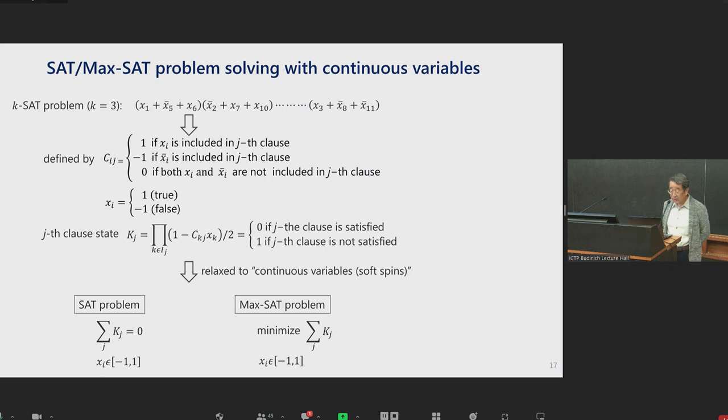We relax the program variable, continuous variables, from discrete to continuous, namely introduce soft spins. Then the SAT problem and the max SAT problem is respectively defined by summation Kj equals 0, or minimize Kj.